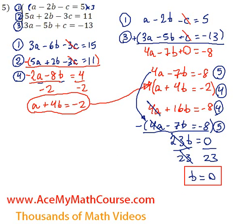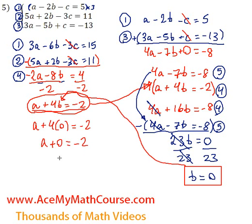Now to find a, that would be simple. I can just take either equation 4 or 5, plug 0 in for b and solve for a. So I'll pick equation 4 because it looks easier. So our b goes right here. a plus 4 times 0 is negative 2. So a plus 0 is equal to negative 2. So a is just negative 2. Fantastic. Now we have a and b.